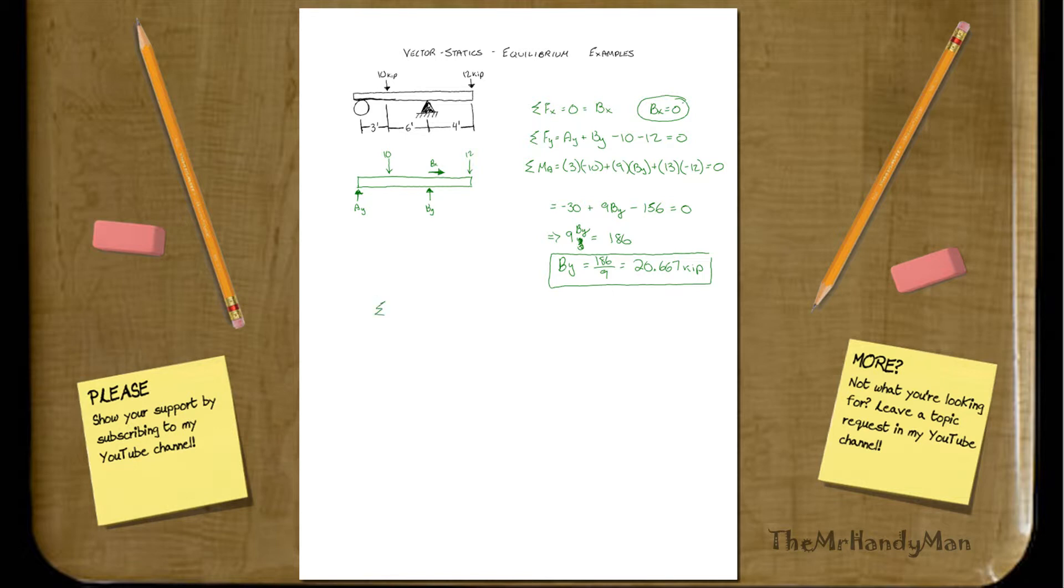So, what we do is we just bring it back to the summation function, right? Sum of Y is equal to 0, is equal to AY plus, here's B of Y, 20.667, minus 10 minus 12 equals 0. And if you work out the arithmetic there, you'll find that your AY will equal 1.33 kips.